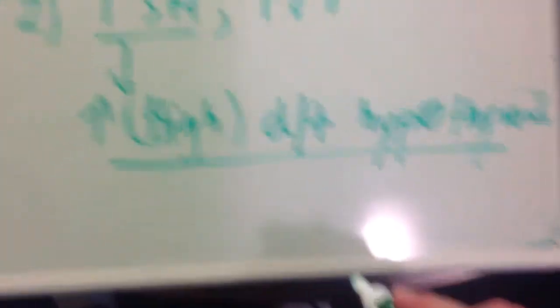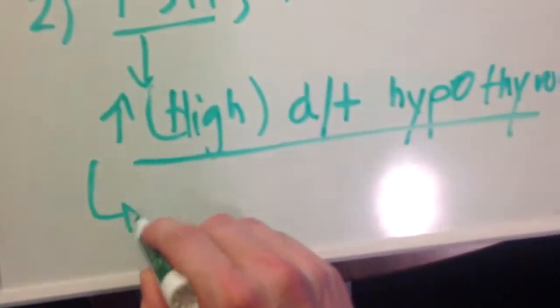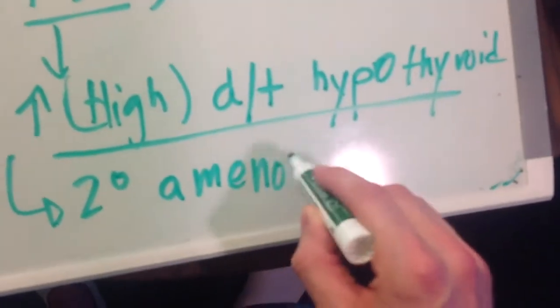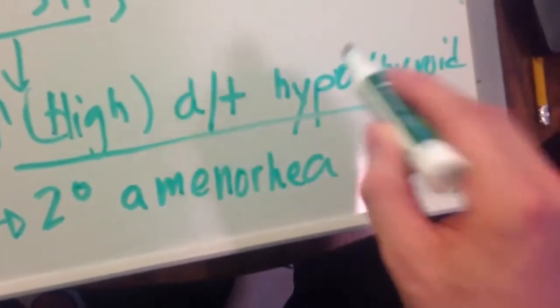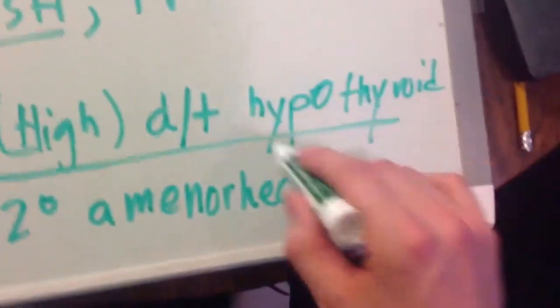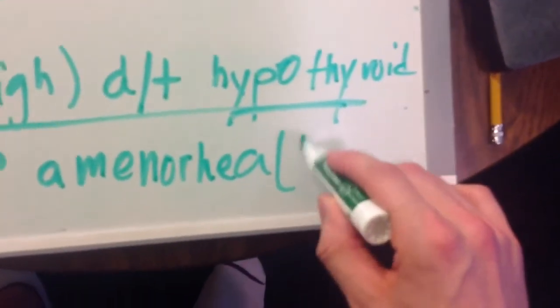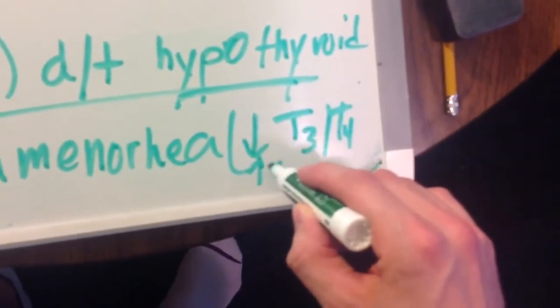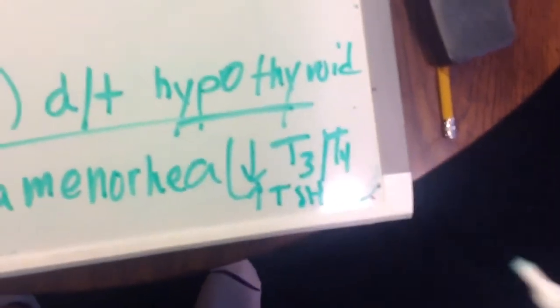If this is the case, she can have secondary amenorrhea due to hypothyroid. So you're going to see a low T3, T4, and a high TSH.